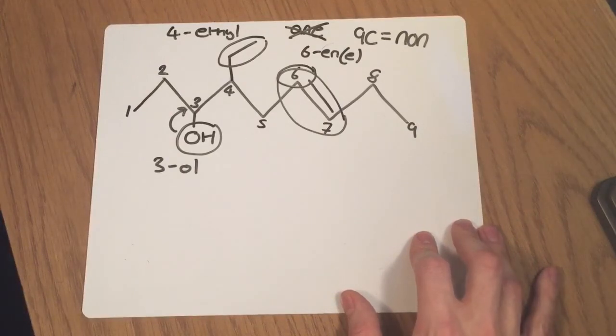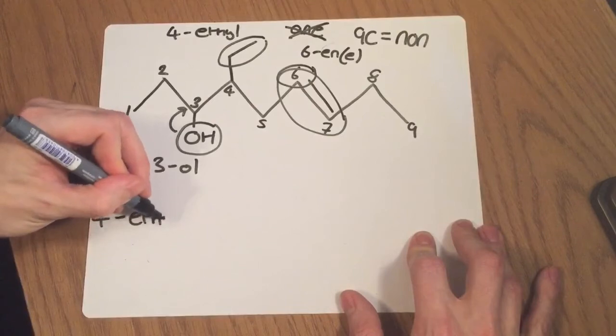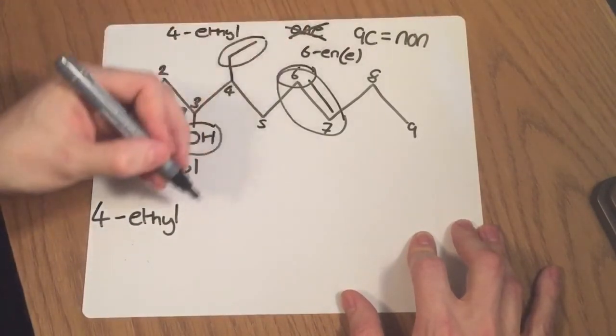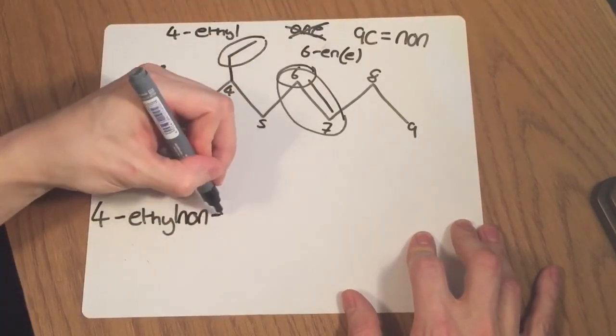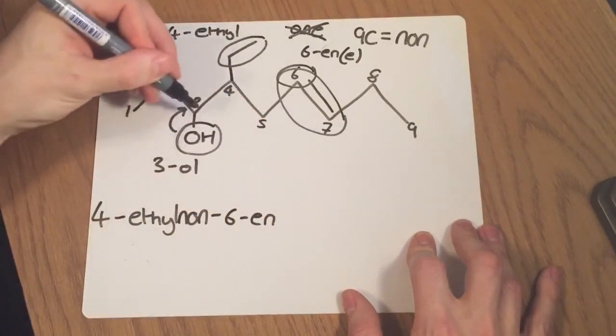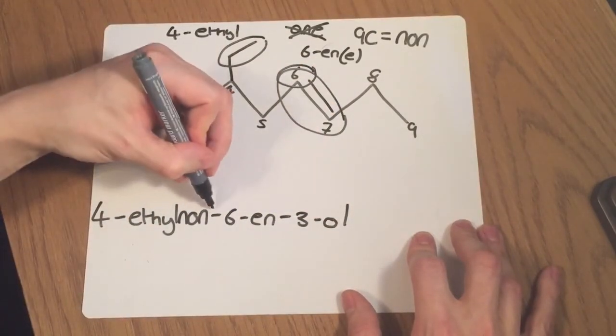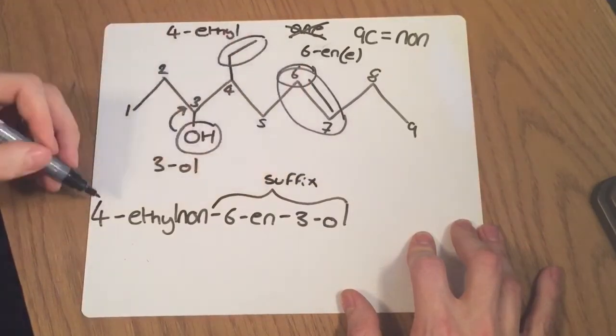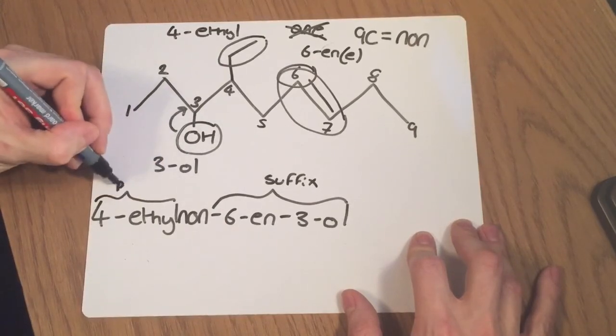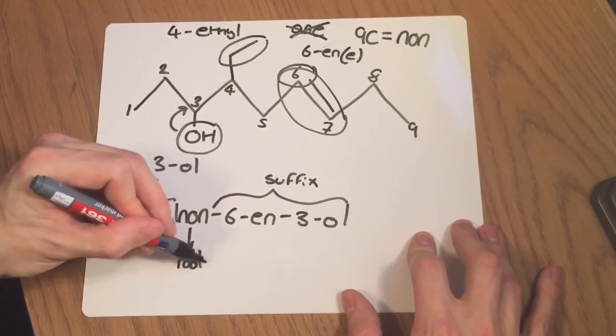So let's put the name together. How many prefixes do I have? Well I've only got one and it's the 4-ethyl. So I can list that first. 4-ethyl, then I've got non as my root, and then I've got 6-en, 3-ol. You can see here these are my suffixes, and here I've got my prefix and they're all orientated around the root part of the name just here.